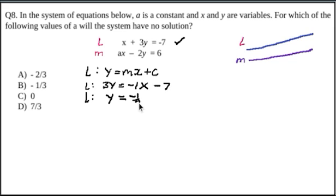Minus 1 over 3x minus 7. So the slope of L is equal to the coefficient of the x, which is minus 1 over 3.